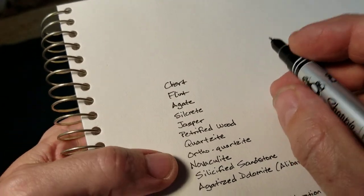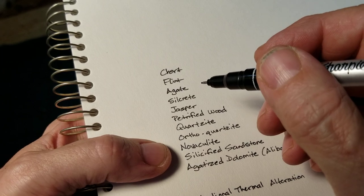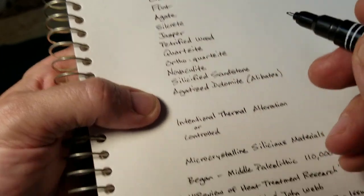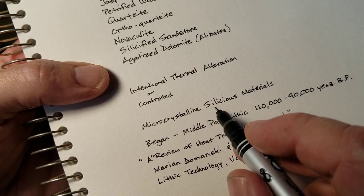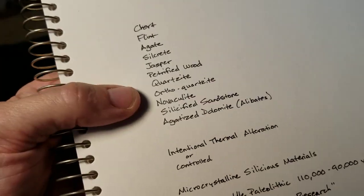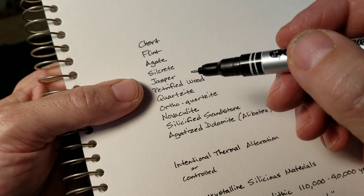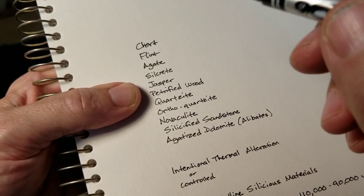So many different things can be heat treated, different types of stone. They're called microcrystalline silicious materials and I'll just go through a list of materials that I looked up.